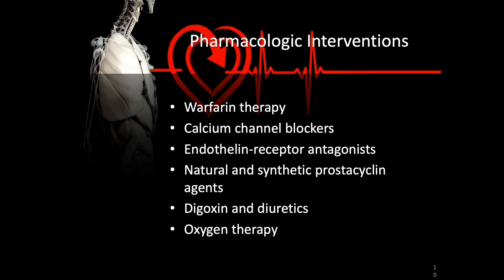Calcium channel blockers are used to dilate blood vessels. Endothelin receptor antagonists have been shown to be the most effective in the treatment of PAH by causing blood vessel relaxation and a decrease in pulmonary arterial pressure. However, they do cause overall vasodilation and can cause hypotension. And although natural and synthetic prostacyclin agents provide the best specific dilation of pulmonary blood vessels, the problem is that these medications are highly prone to error, particularly when given by the IV route. PAH often results in heart failure; digoxin, diuretics, and oxygen therapy are often indicated.